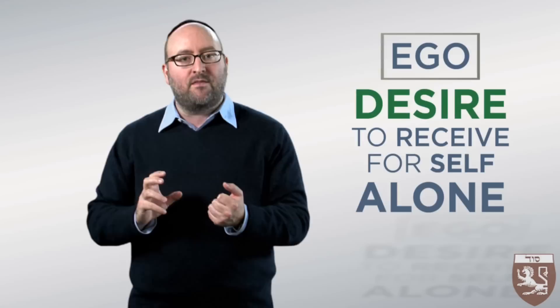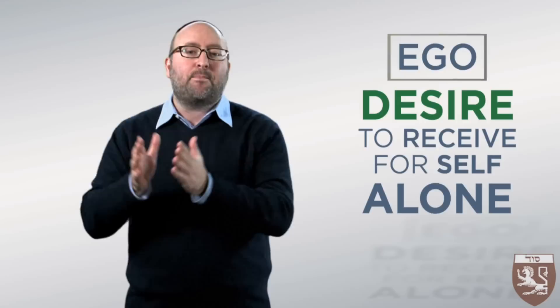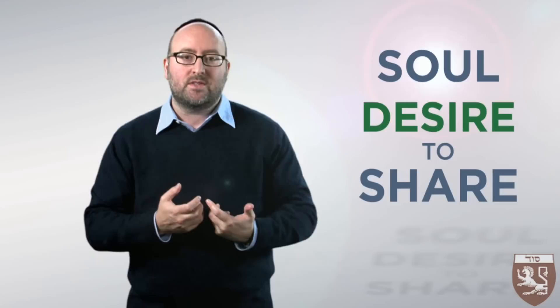The Kabbalists teach that we are born with two natures, one that is called a desire to receive for the self alone, sometimes referred to as the ego, the desire to always make sure that I am taken care of, always make sure that I receive for myself. That nature separates us from the light of the Creator. There is another nature that we have. The Kabbalists refer to it as coming from our soul. A desire to share, a desire to give to others. That desire, that nature, connects us with the light of the Creator.